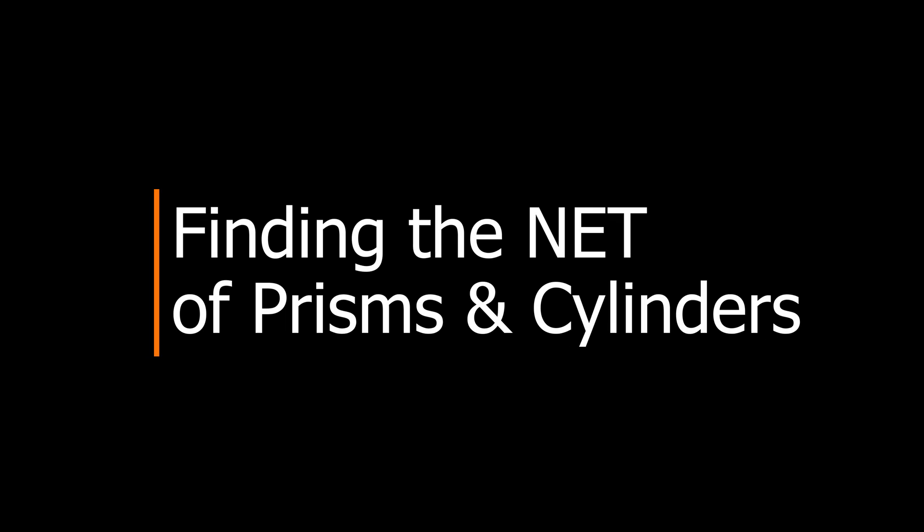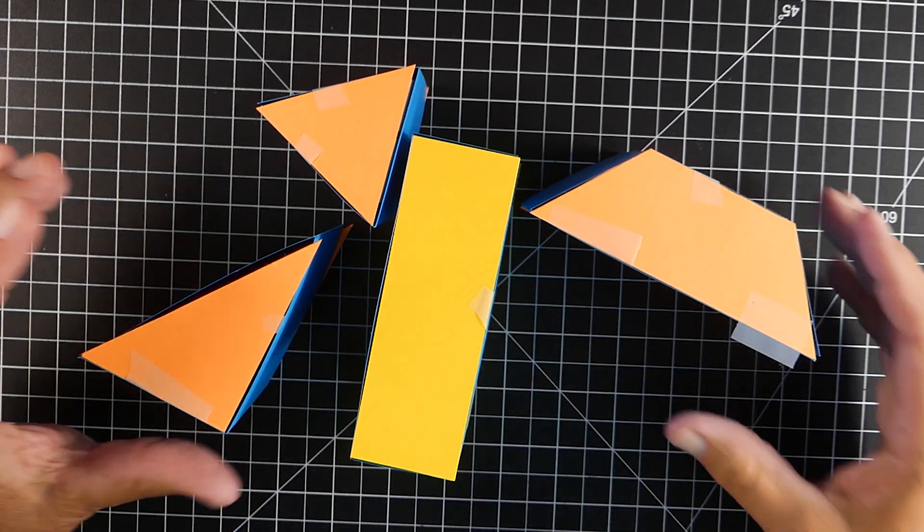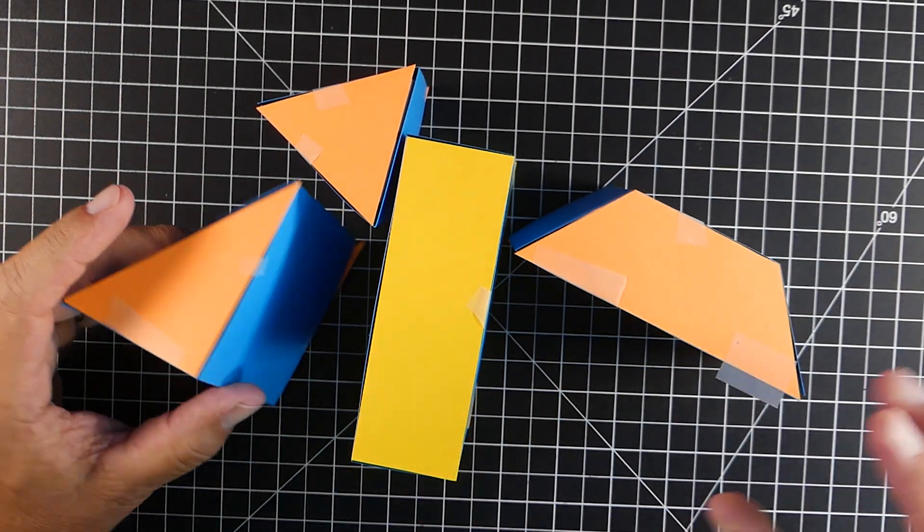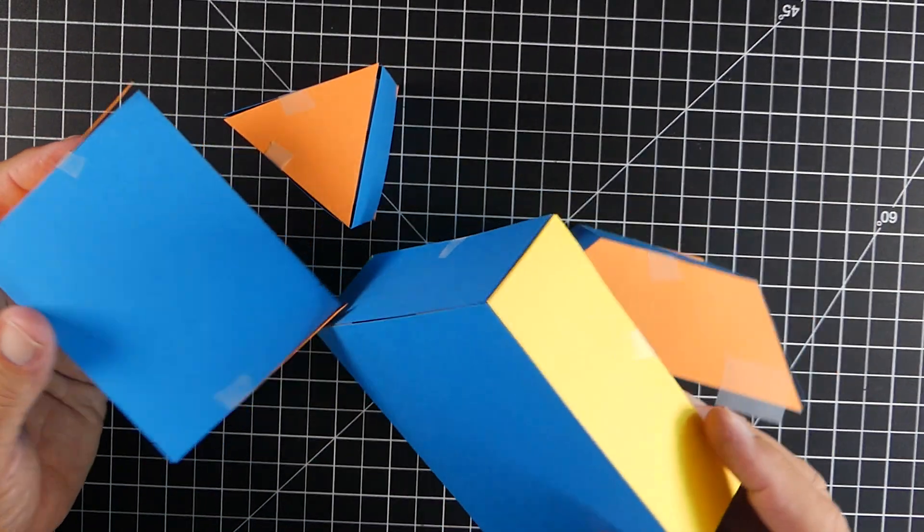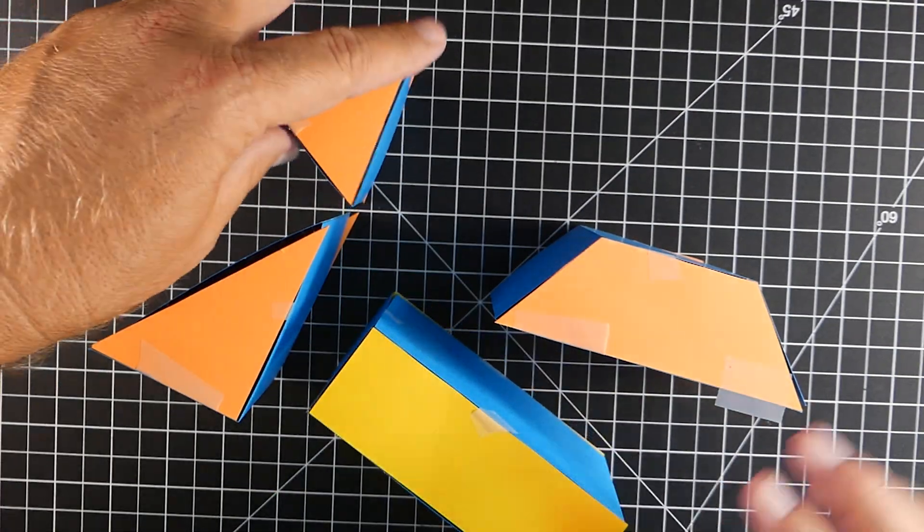All right, we're going to look at the net of some prisms and also a cylinder. So first, let's look at the prisms. A prism is a three-dimensional object. It has two bases that are parallel and are the exact same size.